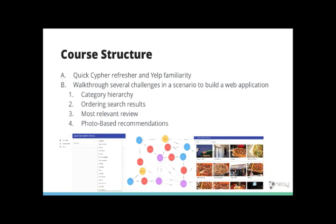We'll look at ordering search results using Pearson's similarity for that. We'll also look at the most relevant reviews, looking at personalized page rank. And then we'll have photos-based recommendation using jacquard and label propagation as well.